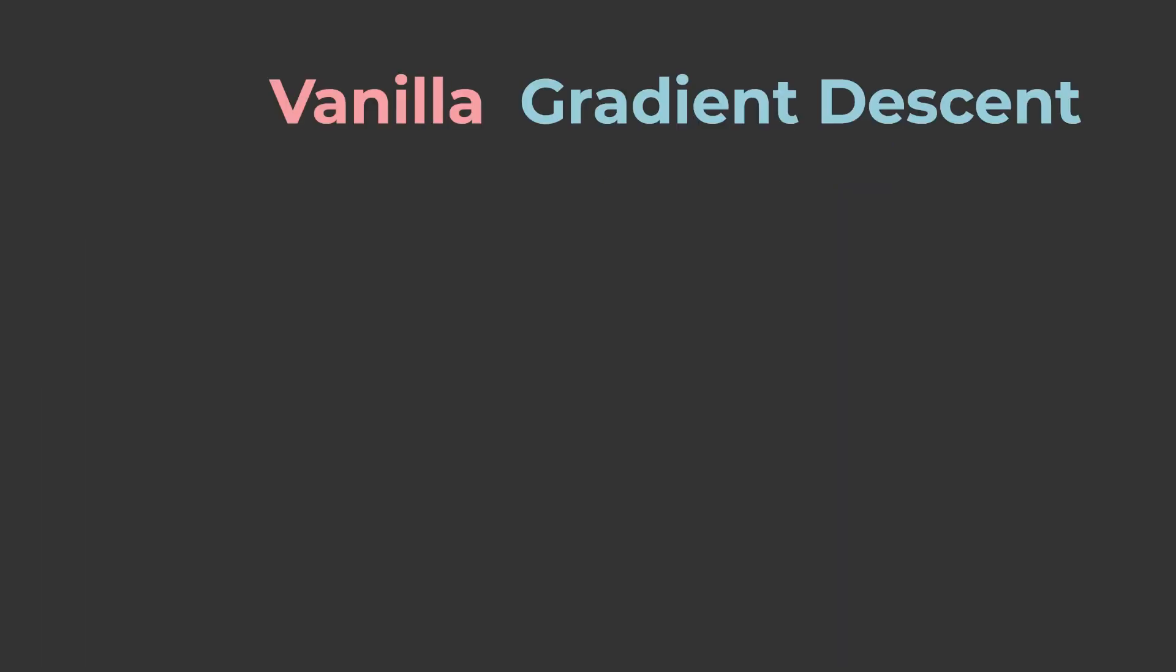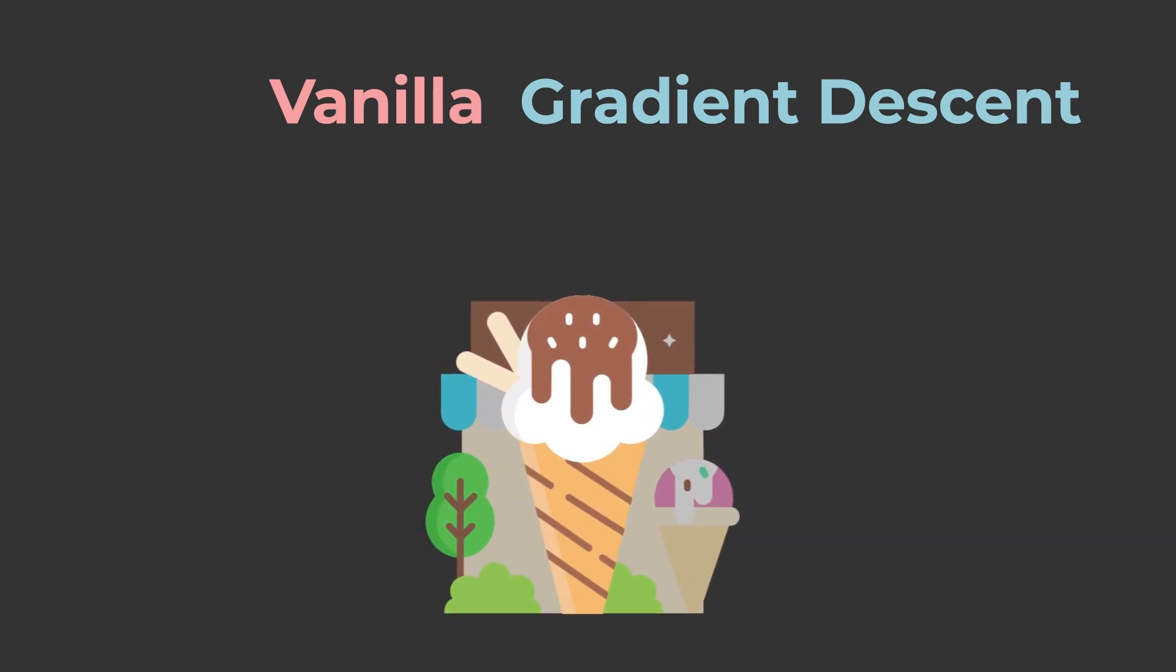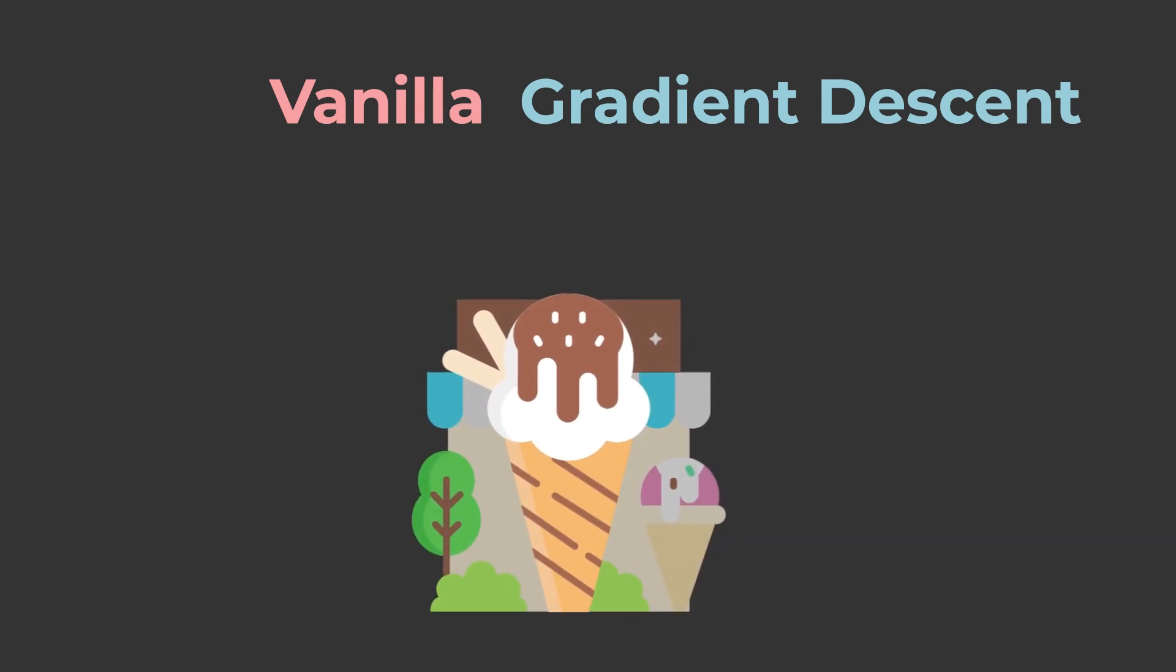Gradient descent, as I just presented it, is known as vanilla gradient descent, because several variants have been developed throughout the years to improve it.